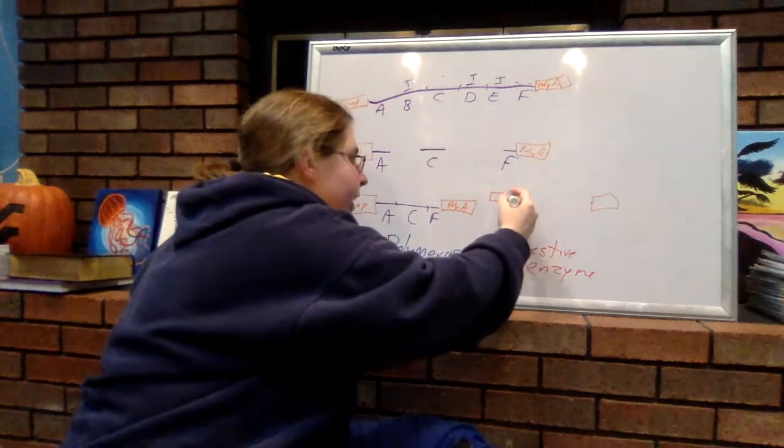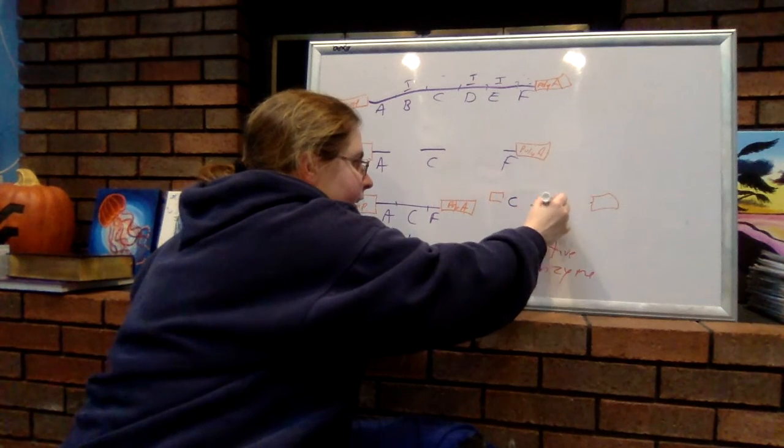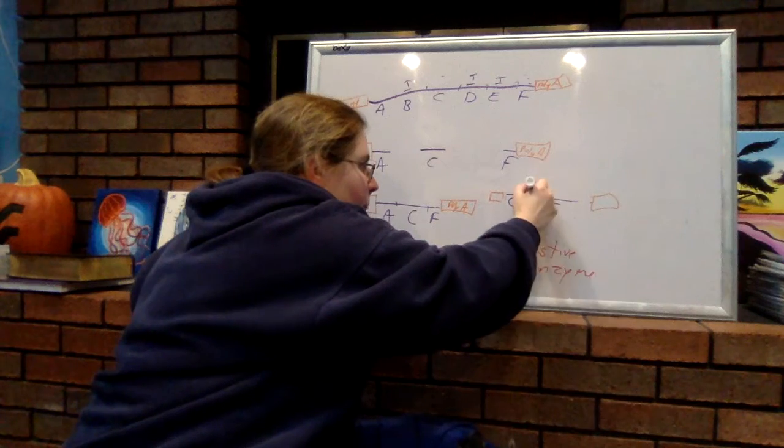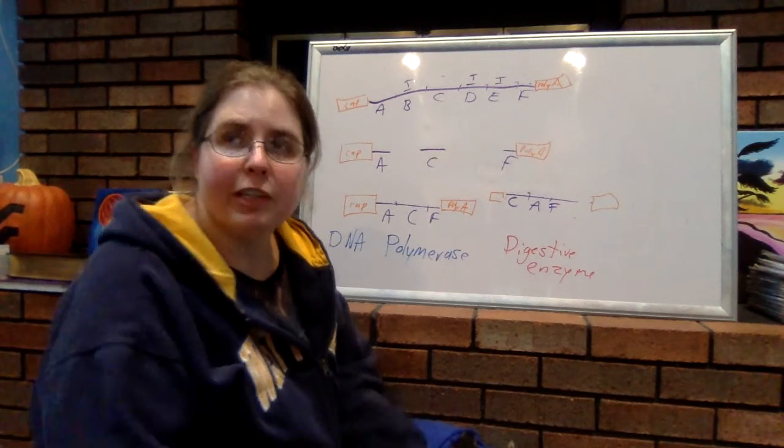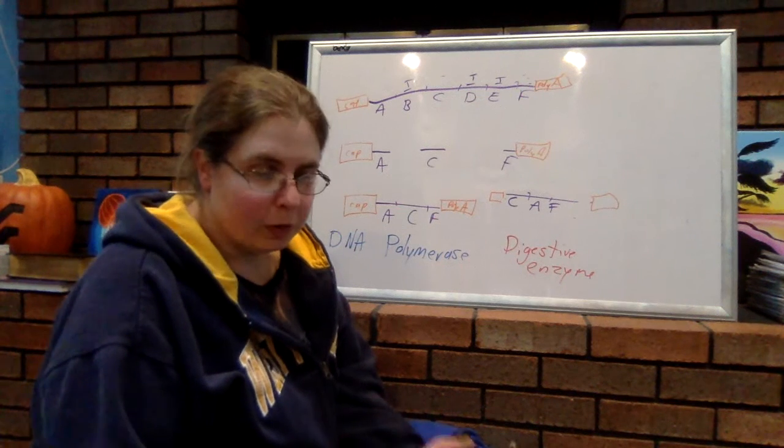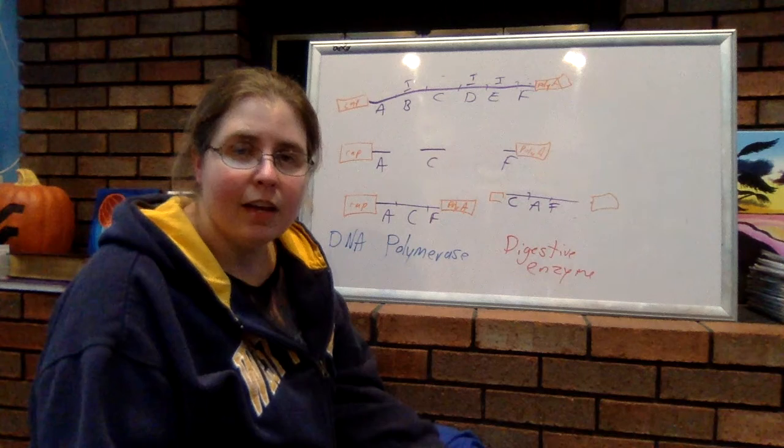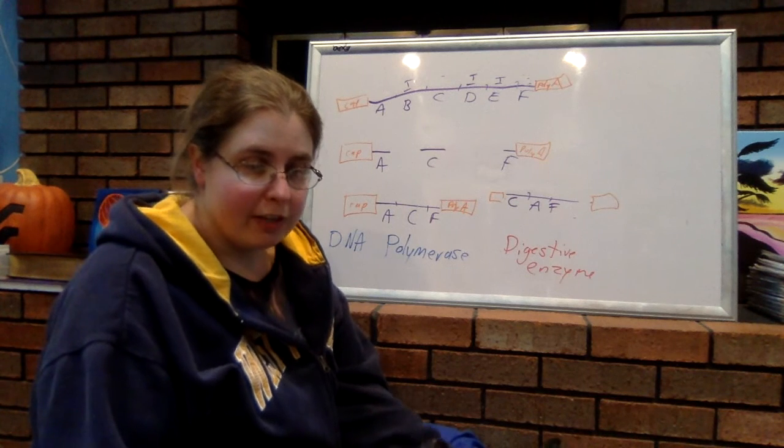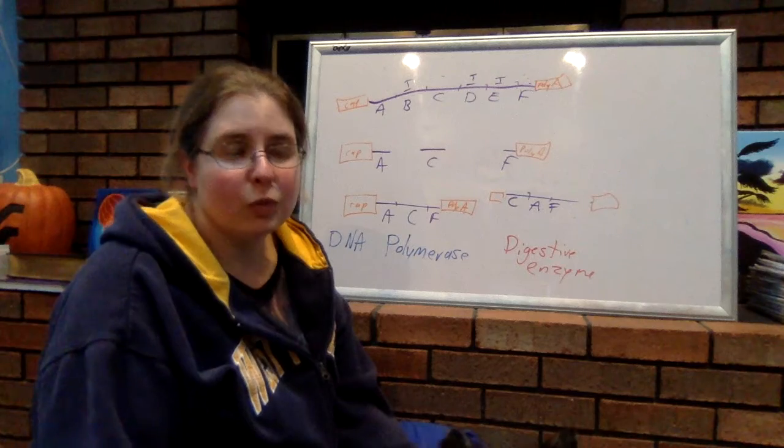So, instead of A, C, F, maybe we have C, A, F. So, that means that, once again, we've changed the order of the bases. Which means we are going to change the amino acids. Which means we're going to change how the amino acid chain can come together and fold. Which means we're going to change the protein and its function.